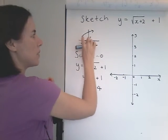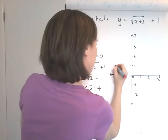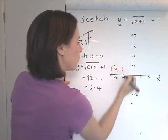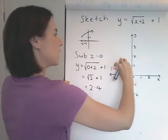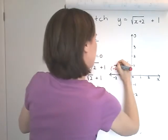This is the shape of the graph. The endpoint is at negative 2, 1, about here. Label that endpoint negative 2, 1, and shaped like this with a y-intercept of roughly 2.4.